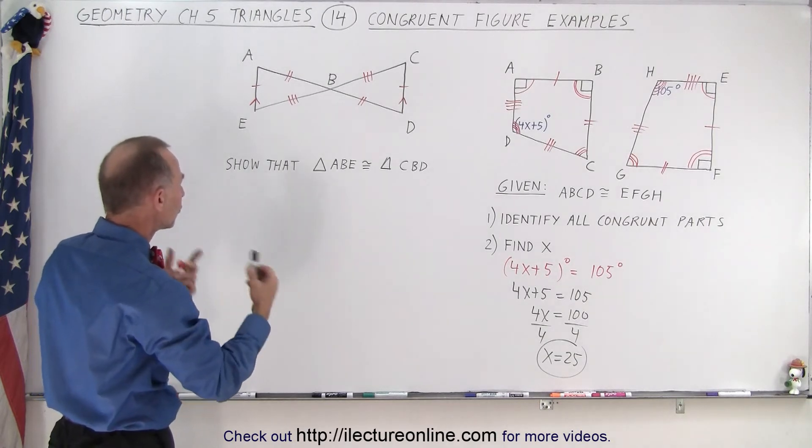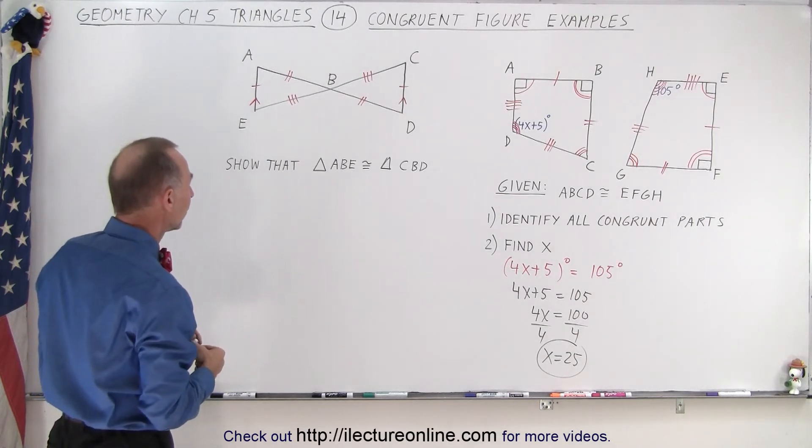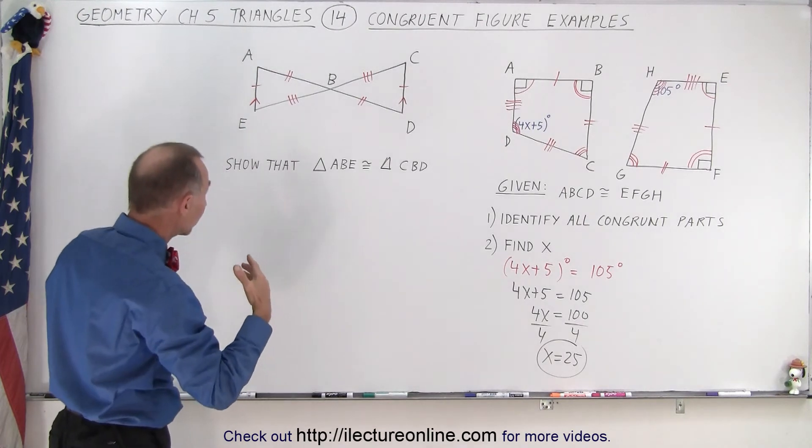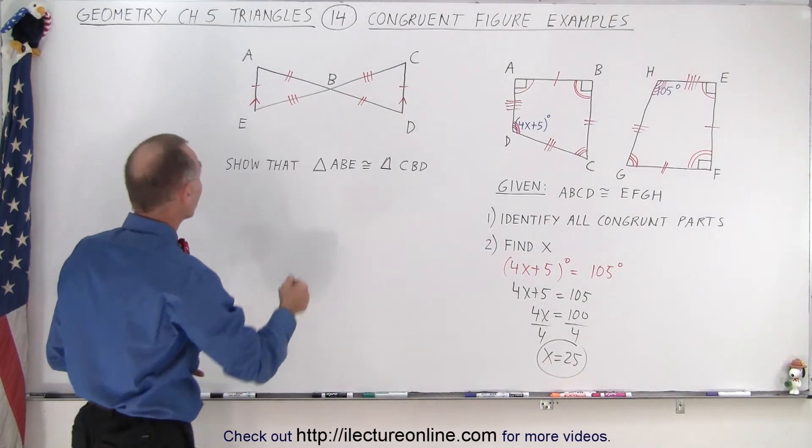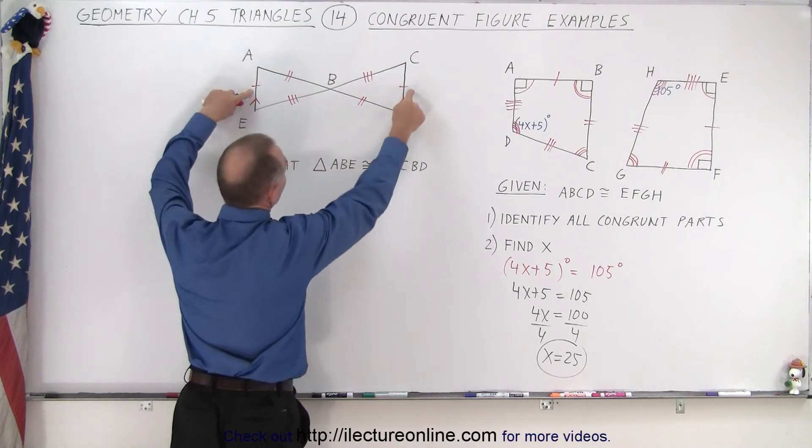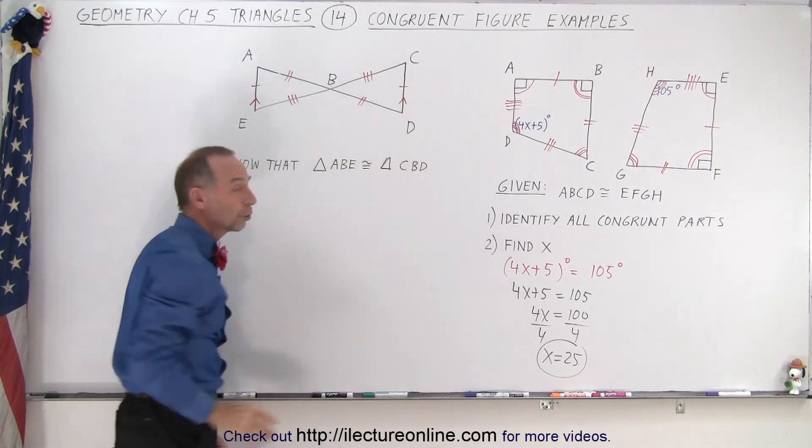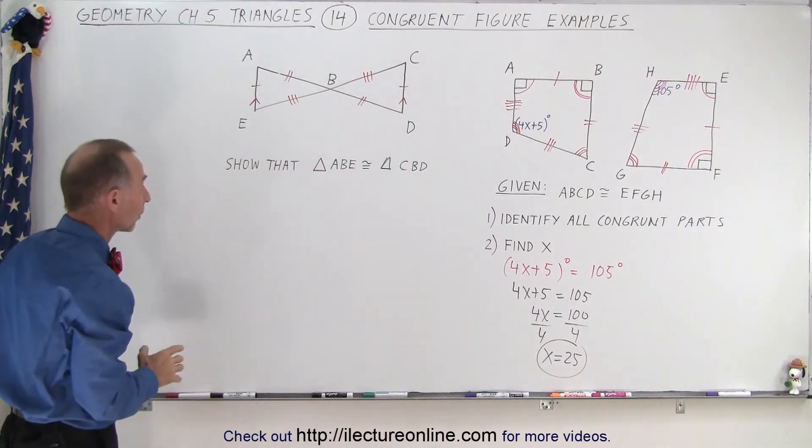Well, that means that both the corresponding sides must have the same length. And we can see that this has the same length as this, this has the same length as this, and this has the same length as that. So we can see that all the corresponding sides are congruent.